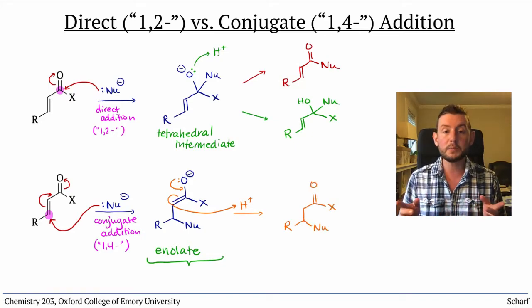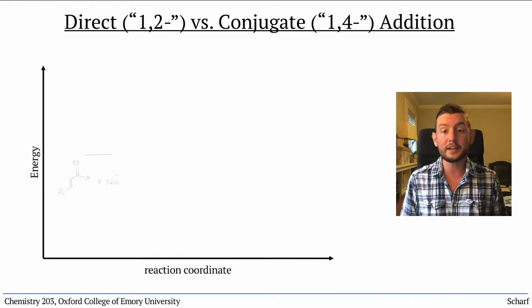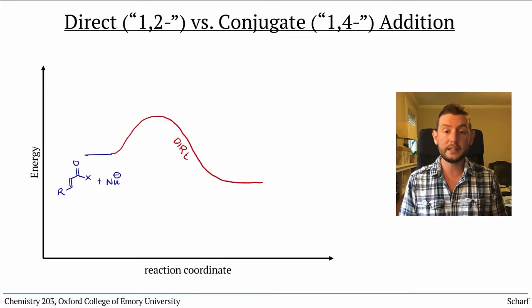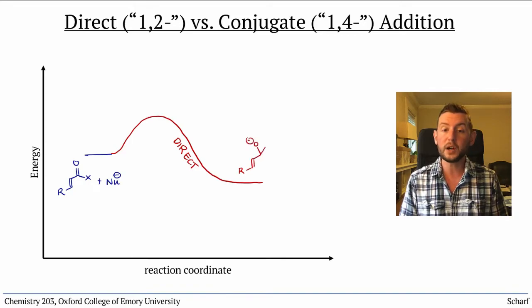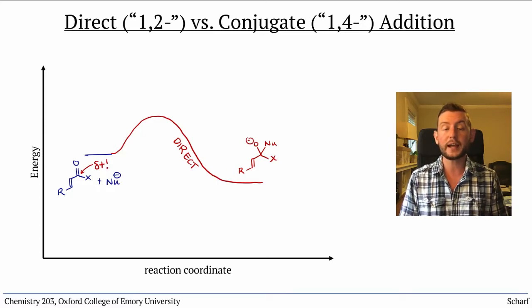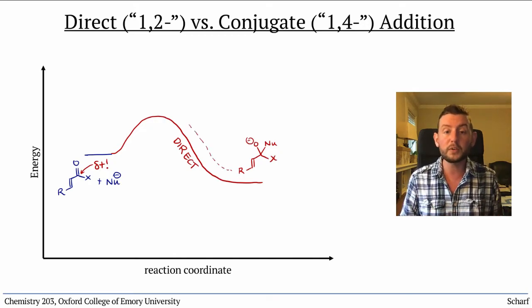These two possible reaction pathways fit the pattern of kinetic versus thermodynamic control. Direct addition is usually the fastest pathway because the carbonyl carbon has a relatively large partial positive charge, and nucleophiles are initially attracted to that site. But if the nucleophile is also a decent leaving group, that step is fairly reversible.